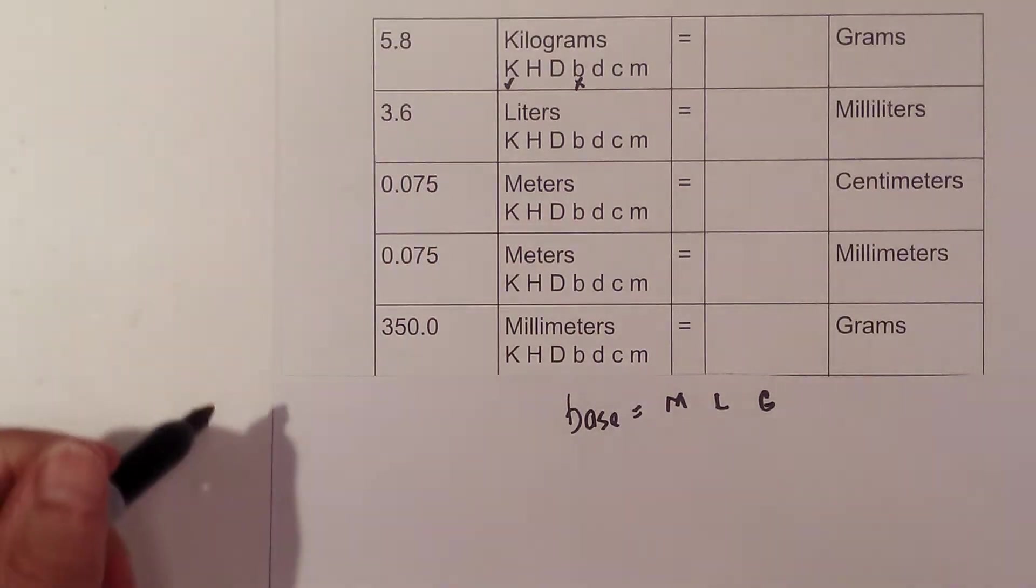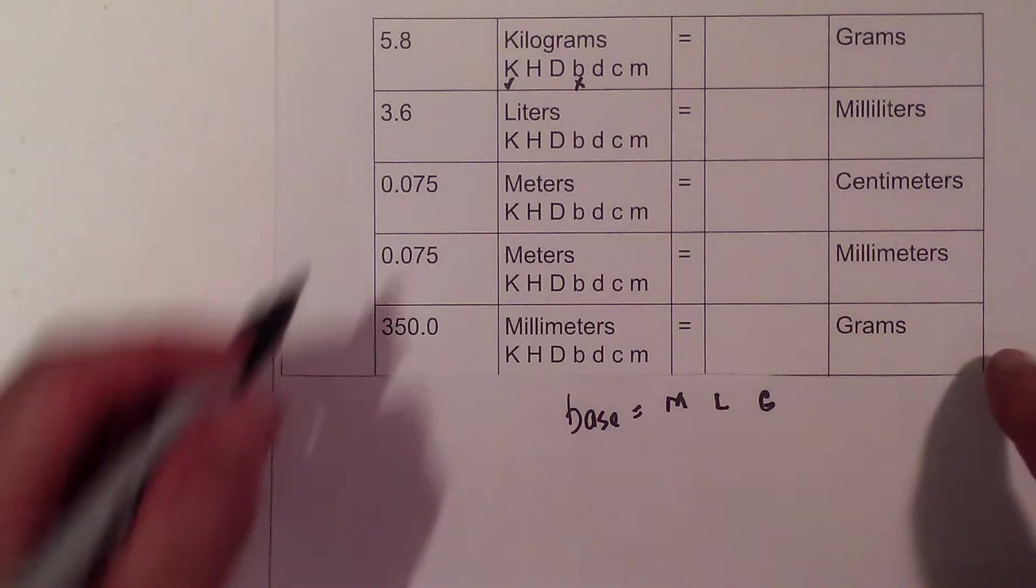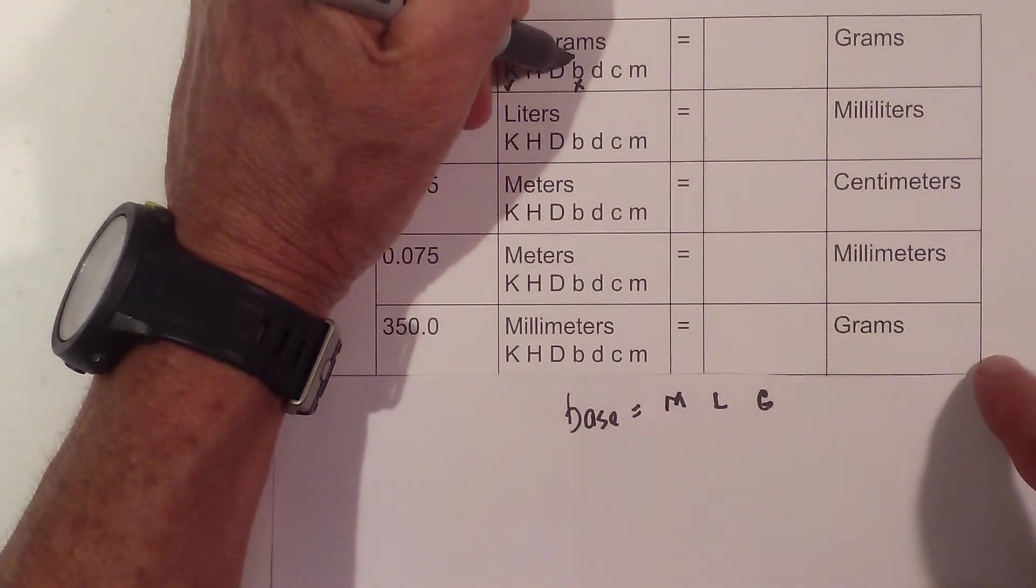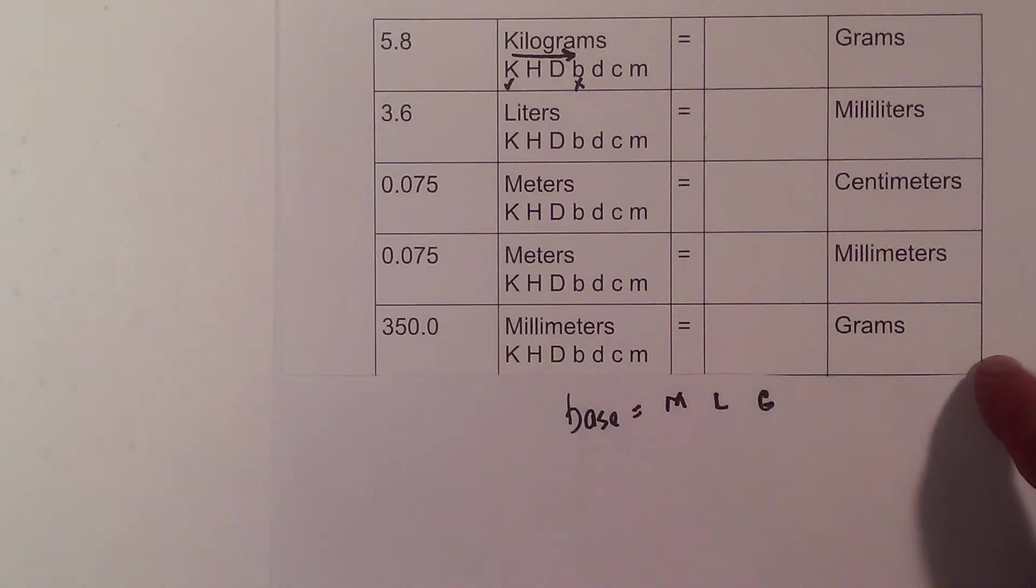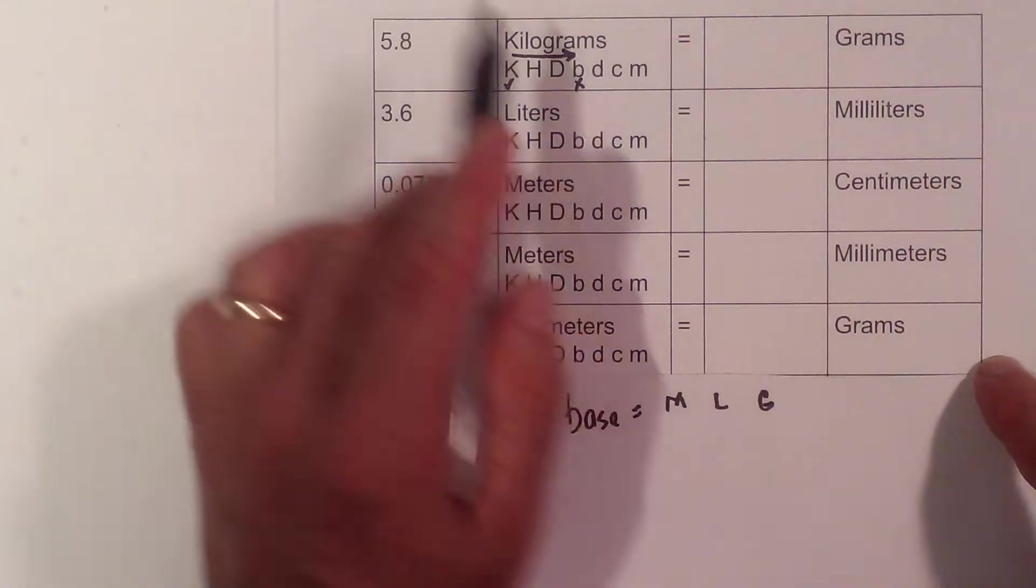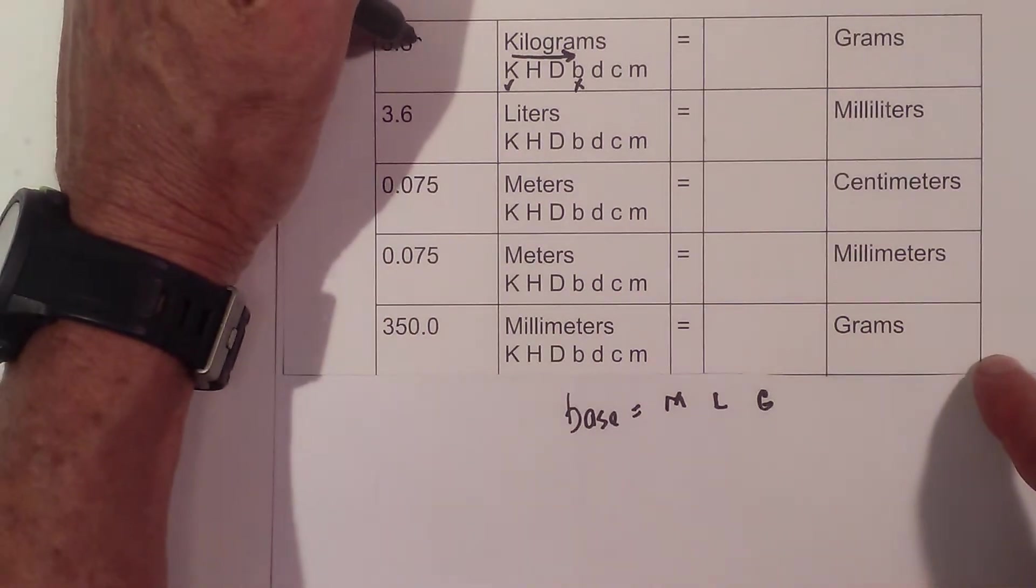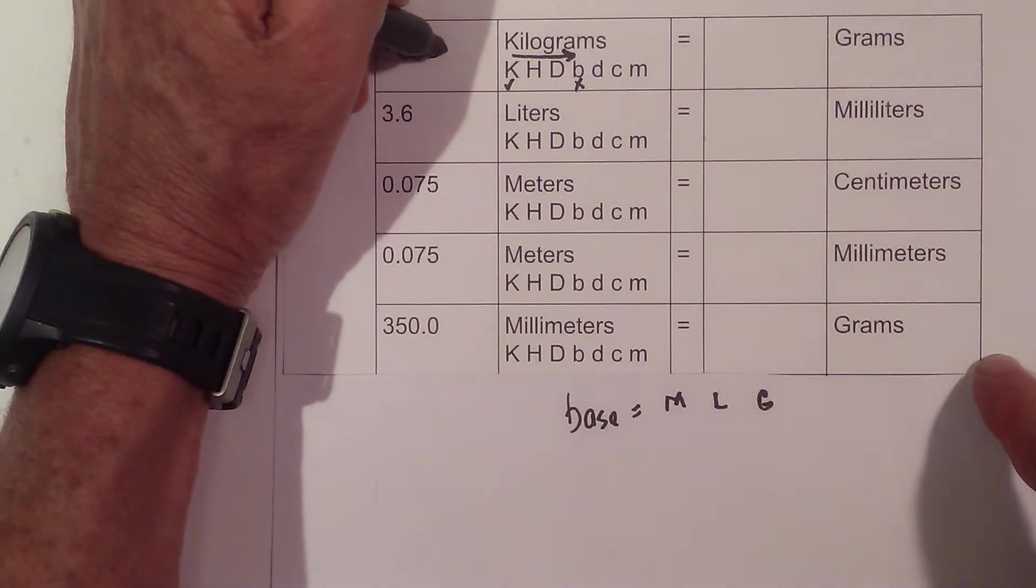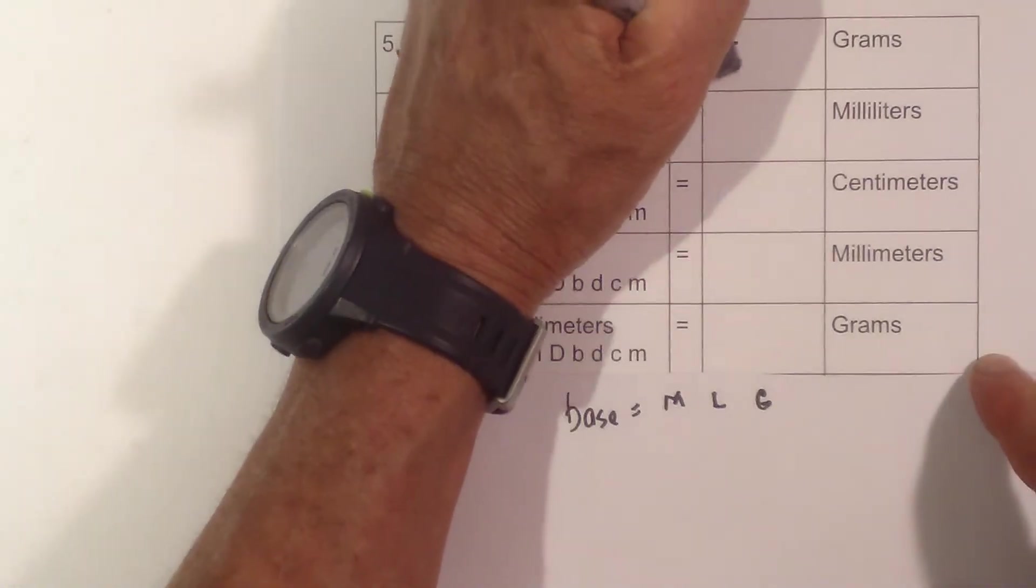I then always go from check to X with my arrow, which tells me which direction the decimal will be moving. Then I just count one, two, three. I'm going to add some zeros, so I go one, two, three. That becomes 5,800 grams.